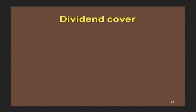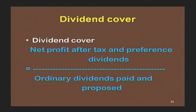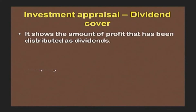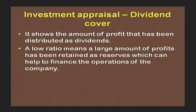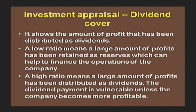Dividend cover is computed as net profit after tax and preference dividend divided by ordinary dividend paid and proposed. It shows the amount of profit that has been distributed as dividend. A low ratio means a large amount of profits has been retained as reserves, which can help finance operations. A higher ratio means a large amount of profit has been distributed as dividend, and dividend payment is vulnerable unless the company becomes more profitable.